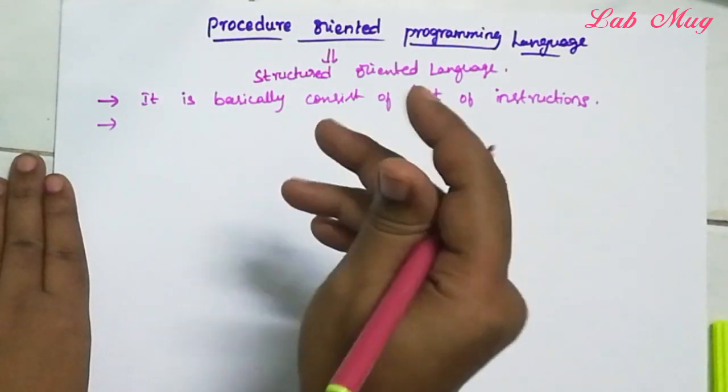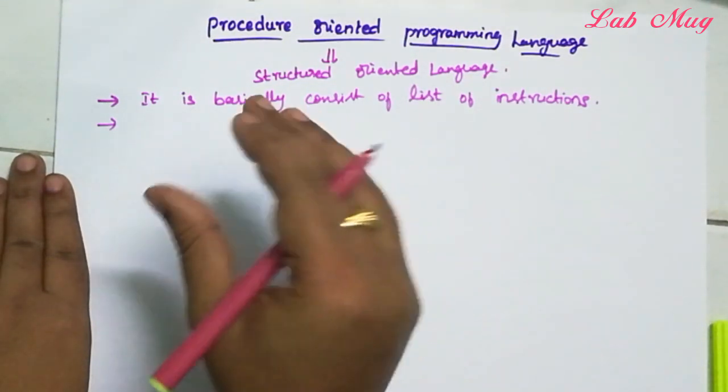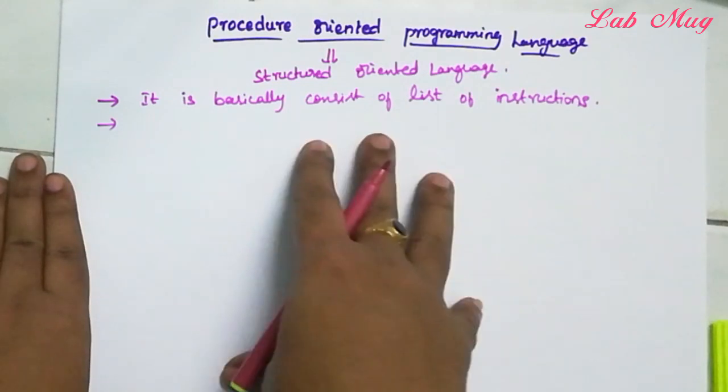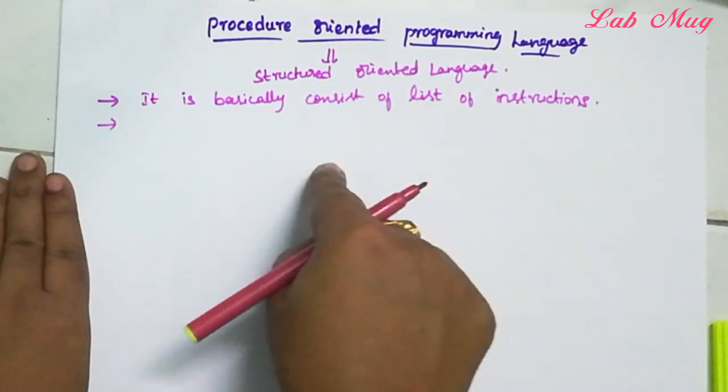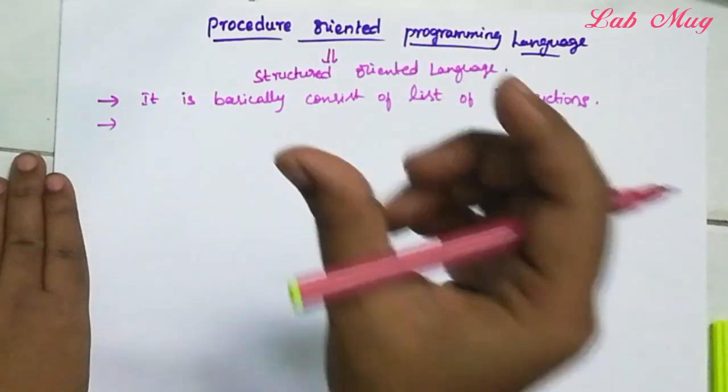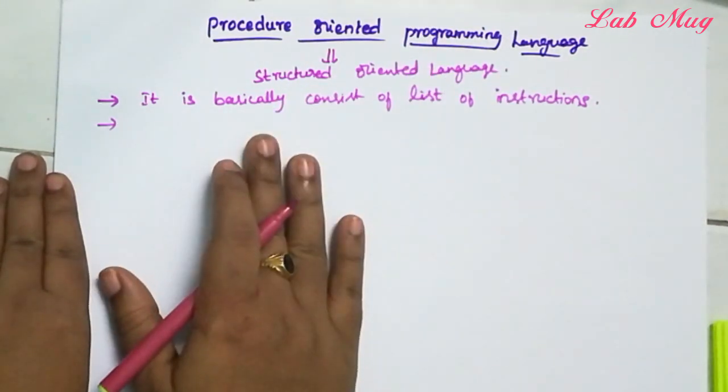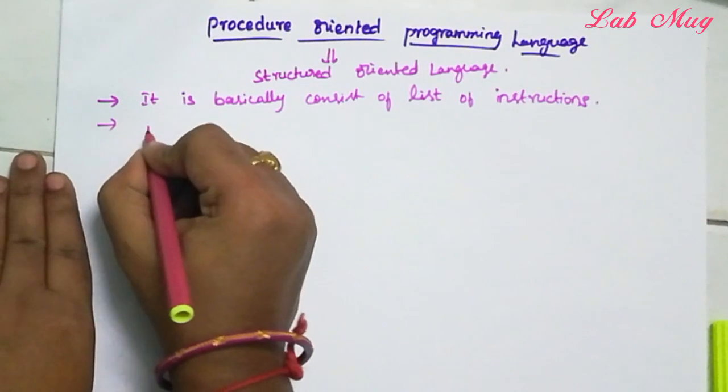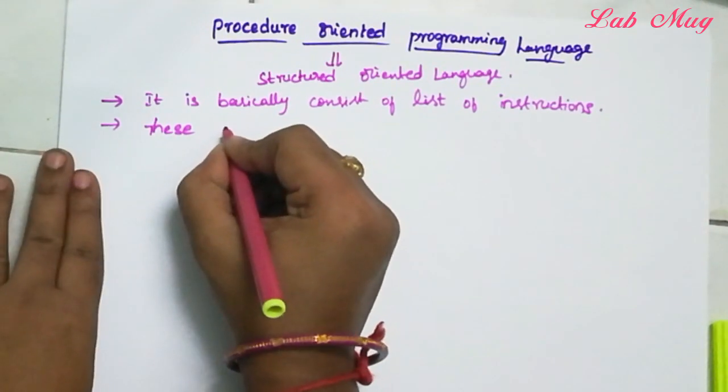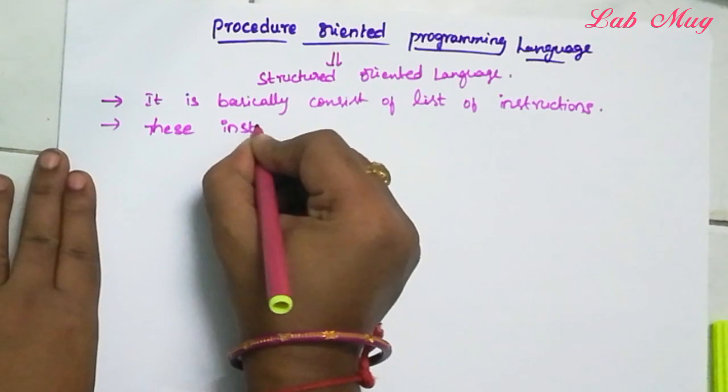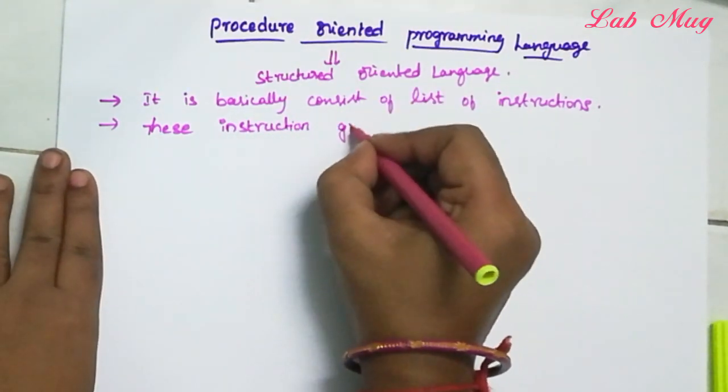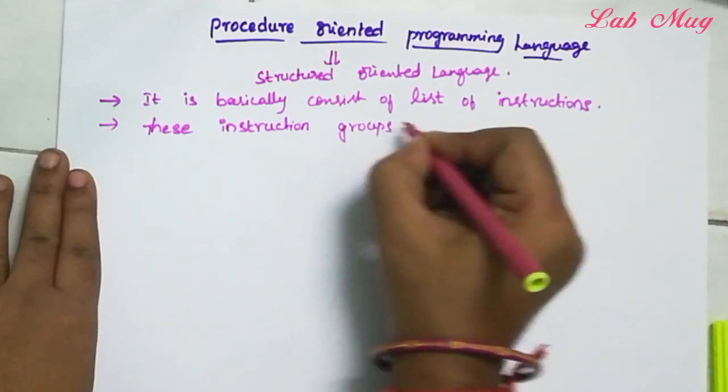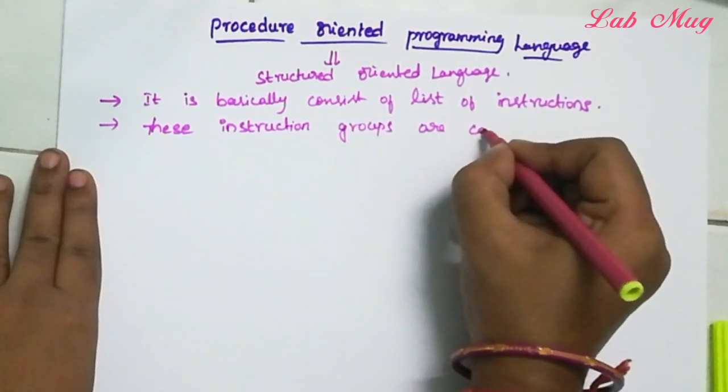And these instruction groups are called as functions. Every function has one instruction as its base. So these instruction groups are called as functions.